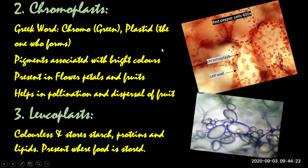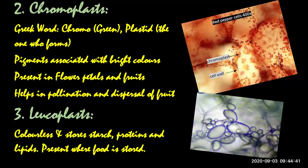The main purpose of chromoplasts is to attract insects and animals for dispersal of fruit. This bright color attracts humans and animals to eat the fruits, and when they do, seeds inside are dispersed. Where the seeds go, a new plant will grow — this is fruit dispersal.